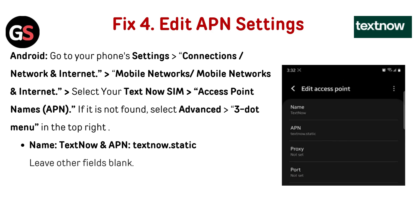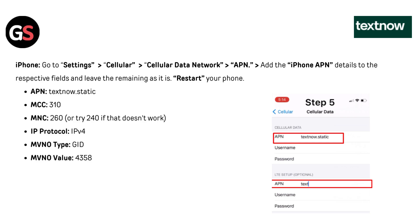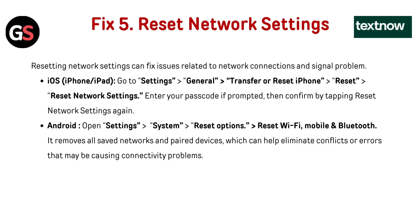Fix 4 — Edit APN Settings. For Android: go to Settings → Connection → Network and Internet → Mobile Network → select your TextNow SIM → Access Point Name. If not found, select Advanced → three-dot menu (top right). Set Name to 'TextNow' and APN to 'textnow.static', leaving other fields blank. For iPhone: go to Settings → Cellular → Cellular Data Network → APN. Enter APN: textnow.static, MCC: 310, MNC: 260 (or 240), IP Protocol: IPv4, MVNO Type: GID, MVNO Value: 4358. Then restart your iPhone.